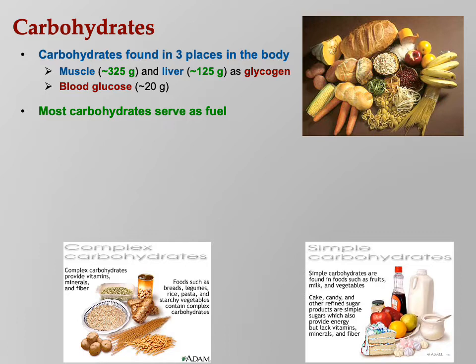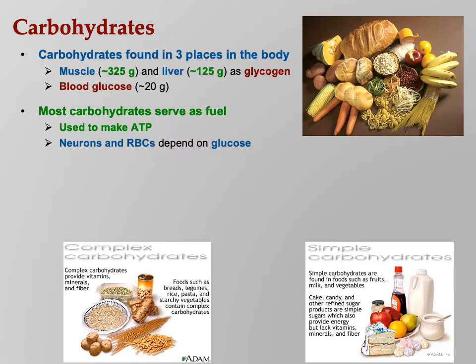Most carbs serve as fuel. Oxygen and glucose make ATP through aerobic respiration. Neurons and red blood cells really want glucose. Red blood cells have no organelles, so they do anaerobic fermentation and produce lactic acid as a byproduct. Neurons don't like to use other energy sources. Some organs like skeletal muscle and heart muscle are fine with fatty acids, but neurons want glucose.